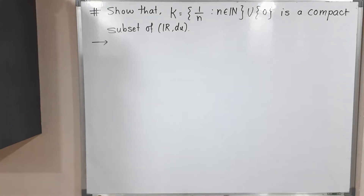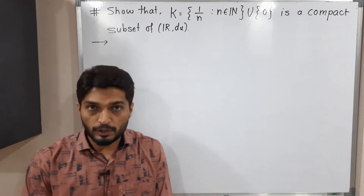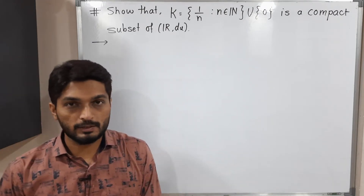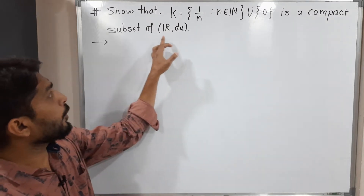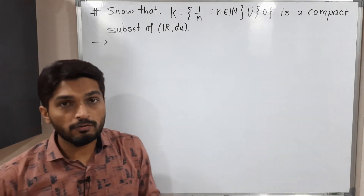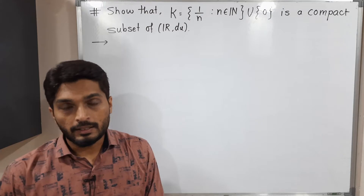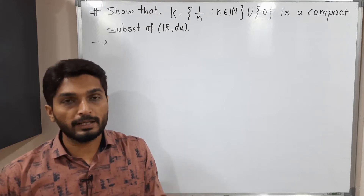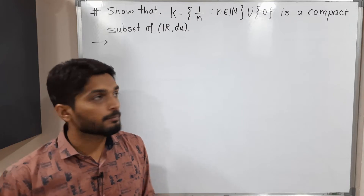Hi everyone. Let us discuss this example. In this example, we have a subset of ℝ and we have to prove that it is a compact set. So we have to prove that it is a compact subset of R with the usual distance, defined as d(x, y) = |x − y|. So let me write first the given set.